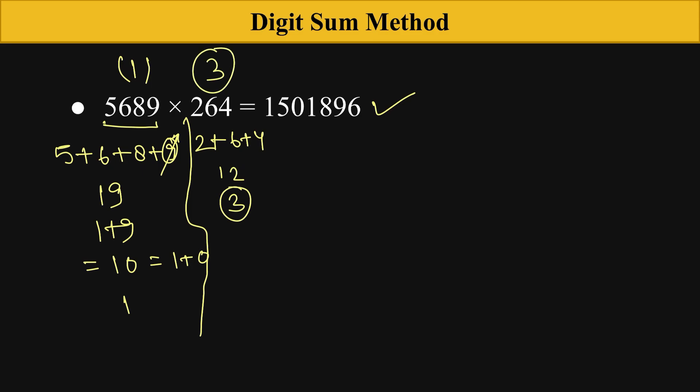Now calculate the digit sum of this number: 1 plus 5 plus 0 plus 1 plus 8 plus 9 plus 6. The 9 we can omit. 1 plus 8 is also 9, so we can omit that too. So 6 plus 1 is 7, and 7 plus 5 is 12, and 1 plus 2 is 3. So its digit sum is also 3.